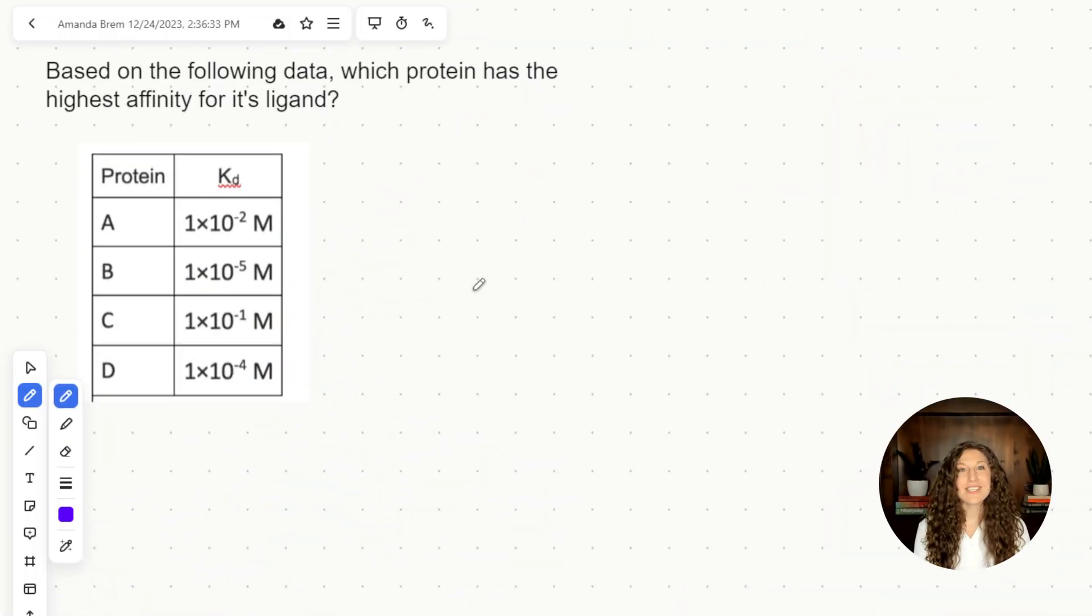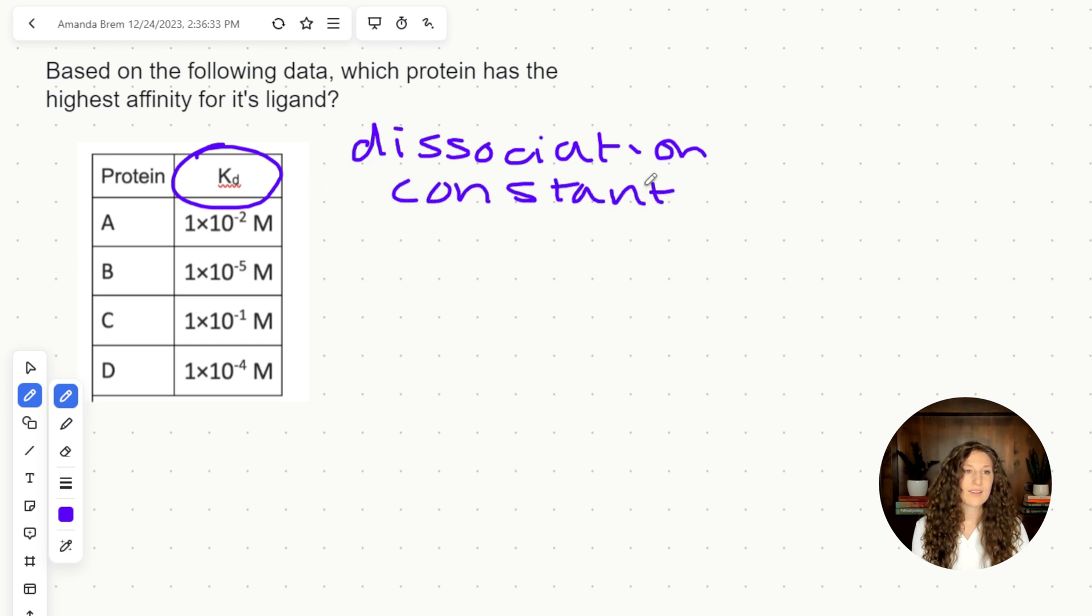To answer this question we first need to look at the data provided. So we're given the four proteins with their KD values. KD is showing us our dissociation constant. And our dissociation constant will tell us how quickly our protein and ligand will dissociate from each other. So it's the opposite of affinity. We're looking for highest affinity in our answer choices, which means our lowest KD. Remember that dissociation constants mean that we are separating, so if we're looking for coming together or affinity, it will just be the opposite.